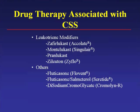There was an FDA consensus meeting that Dr. Rosenwasser participated in, reviewing all reportable cases between 1997 and 2000. There were 63 cases of Churg-Strauss associated with zafirlukast use and 47 associated with montelukast—many of whom had started on zafirlukast and were switched to montelukast. Smaller numbers were seen with zileuton and fluticasone.